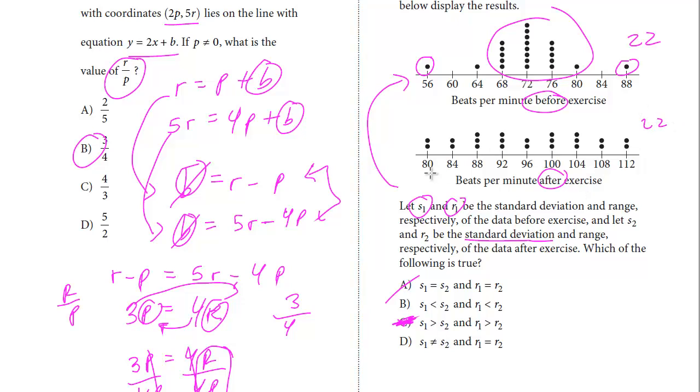I mean, we know the range is equal. Even though they're starting at different values, the range is still 22. We know that the range is equal. And it's got to be D. The range is 22 in both. The standard deviation is not equal. And the answer here is D.